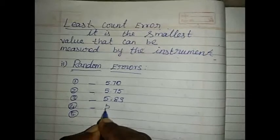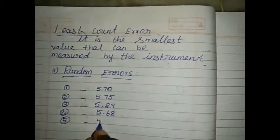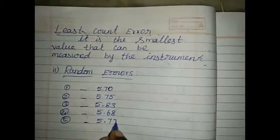In the fourth, the value will be 5.68. In the fifth one, the value will be 5.73.